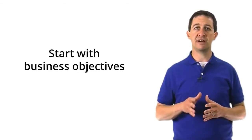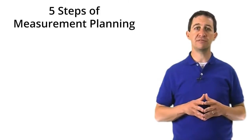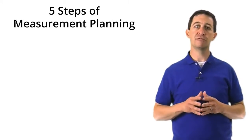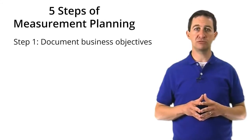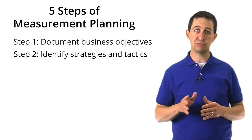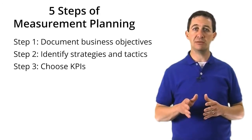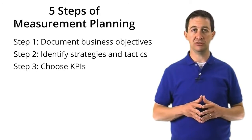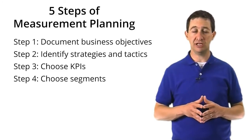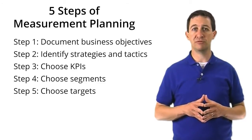You will go through a series of five steps in order to define your measurement plan. First, document your business objectives. Second, identify the strategies and tactics to support the objectives. Third, choose the metrics that will be the key performance indicators. Fourth, decide how you'll need to segment your data. Finally, choose what your targets will be for each of your key performance indicators.